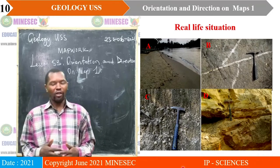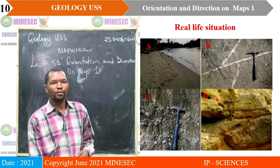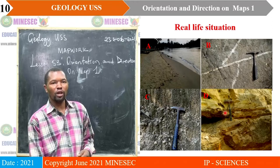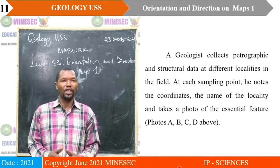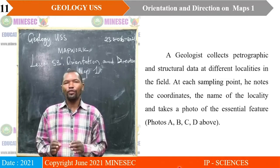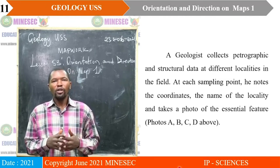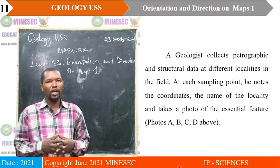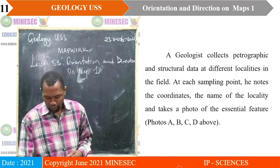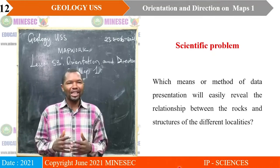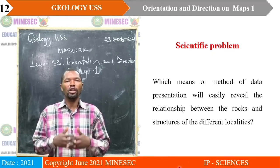Take a look at those photos. We have photo A — a beach — photo B, which is a fracture, C which is a stratification, and D which is an unconformity. A geologist collects photographic and structural data at different localities in the field. At each sampling point, he notes the coordinates, the nature of the locality, and takes a photo of the essential features. Which method of data presentation will easily reveal the relationship between the rocks and the structures of the different localities?